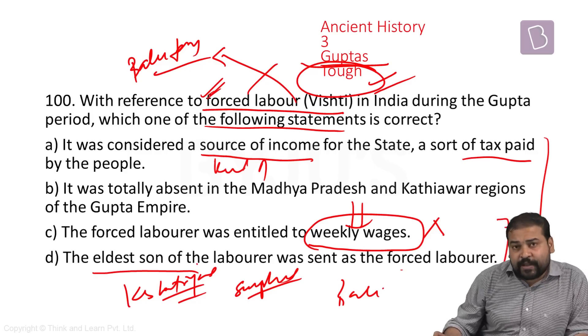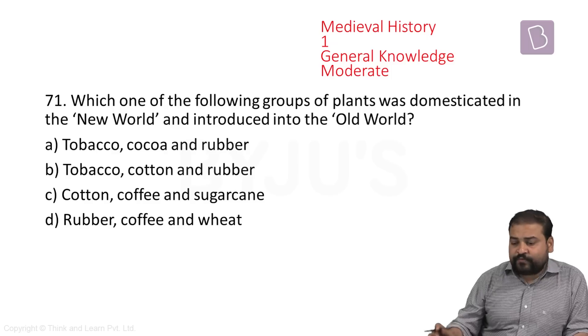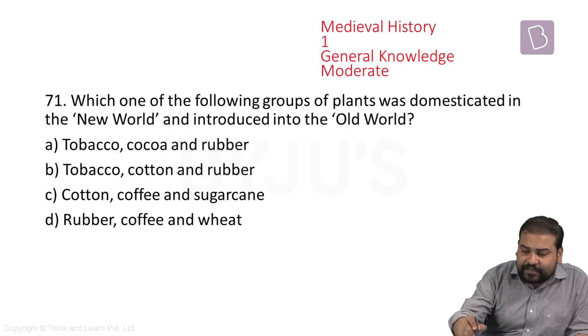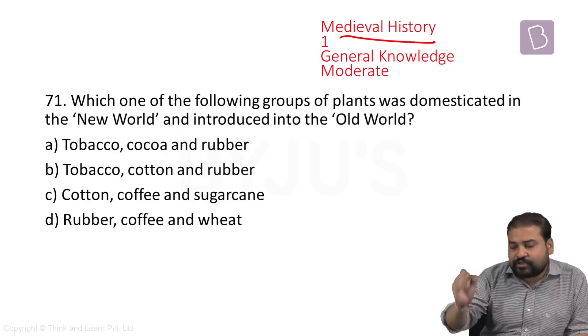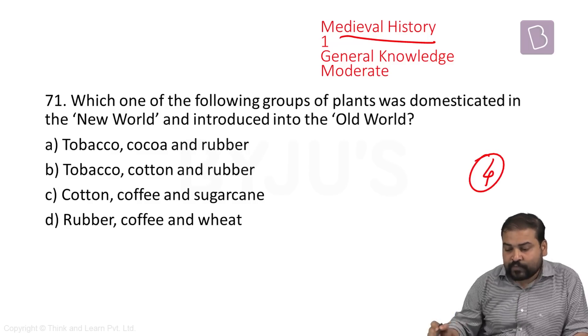The surprise package of this year was medieval, because we all know last year there was only one question from this segment. This year there were four questions.